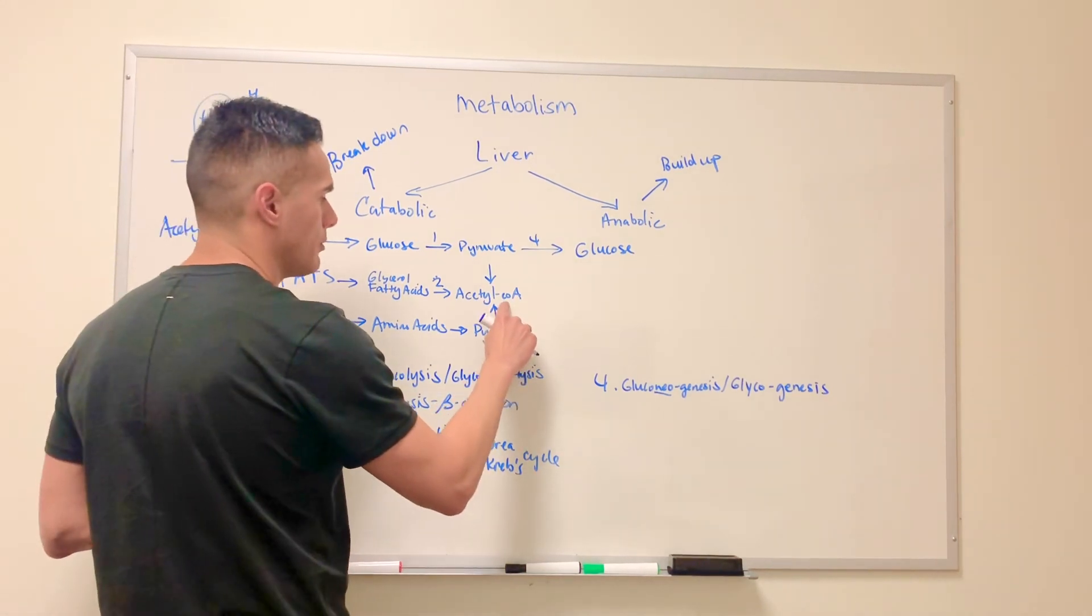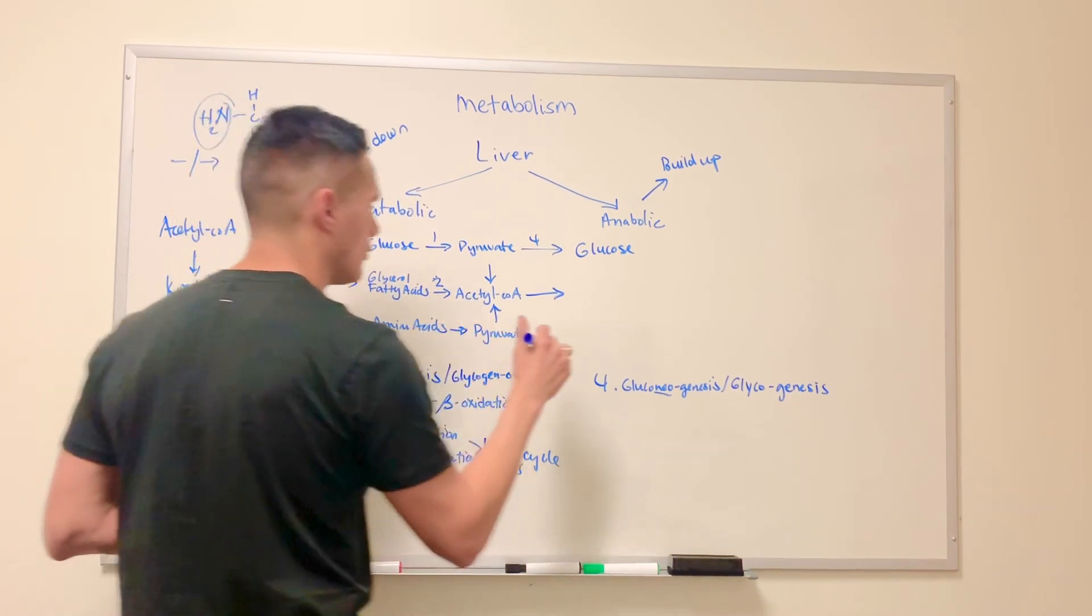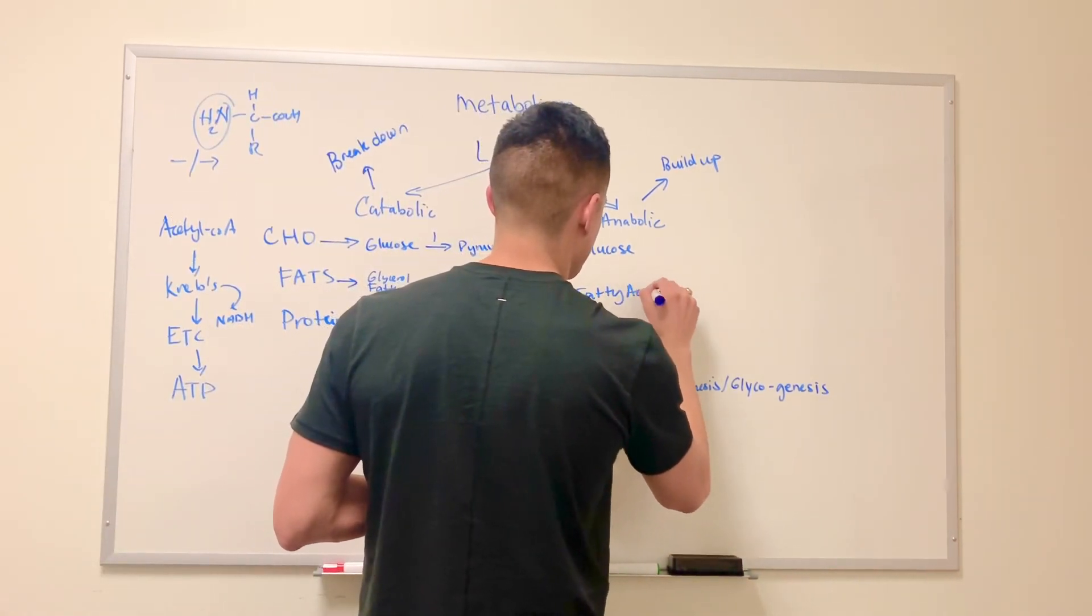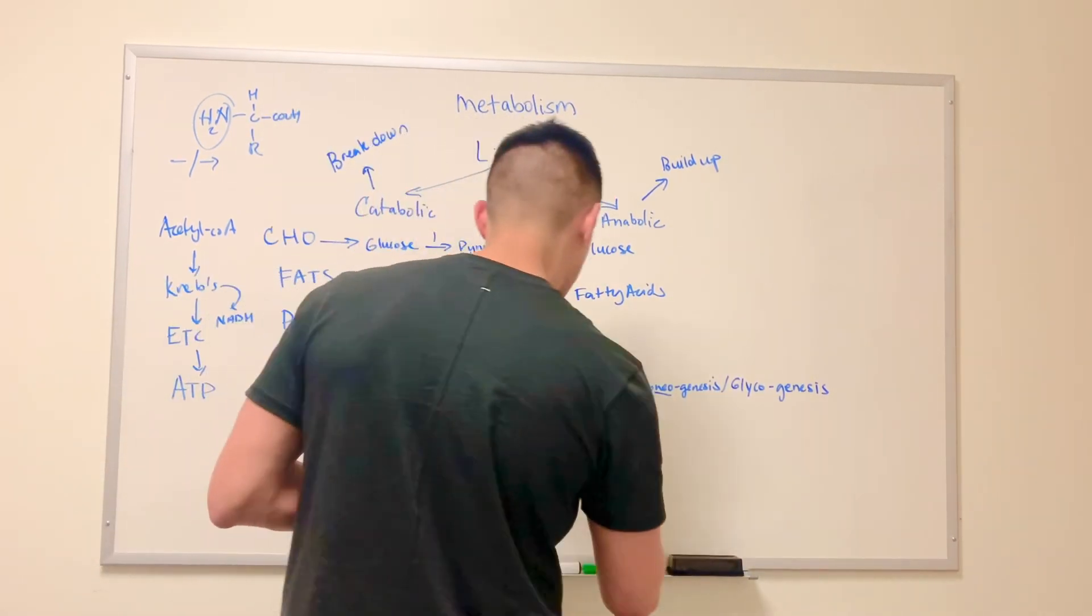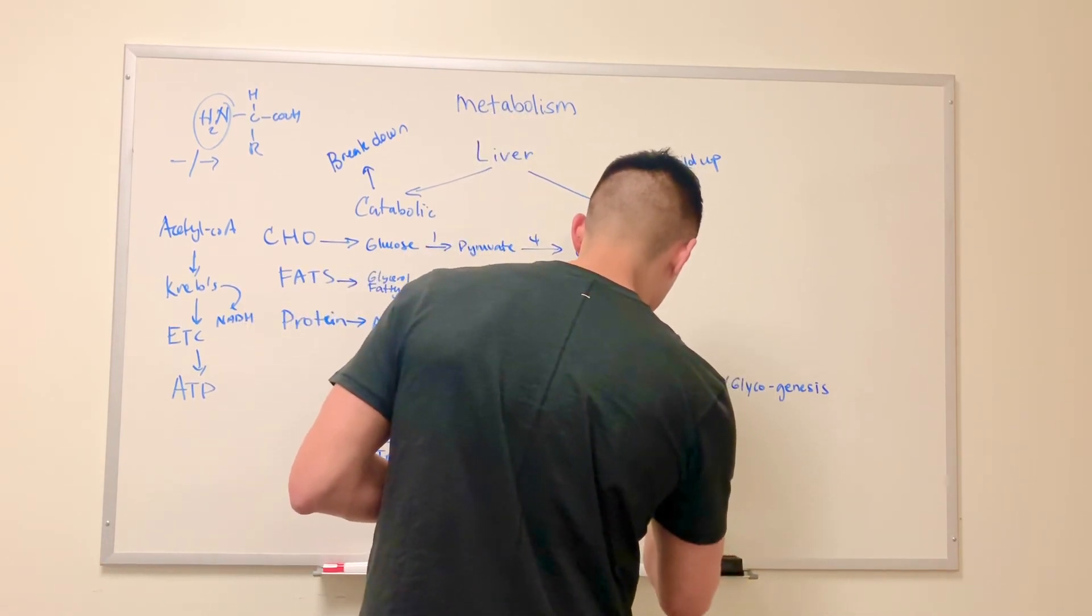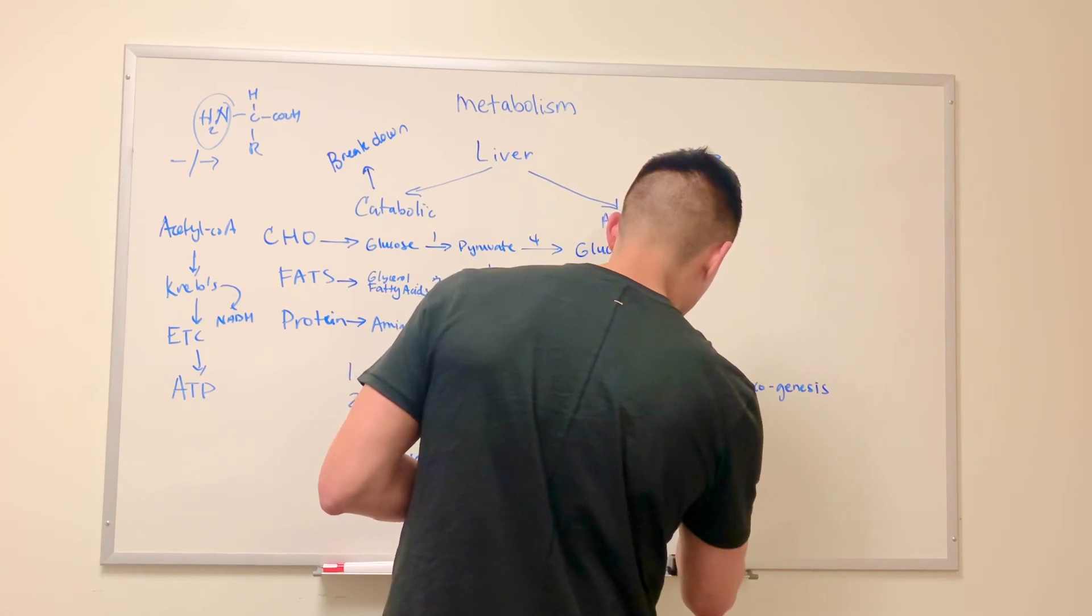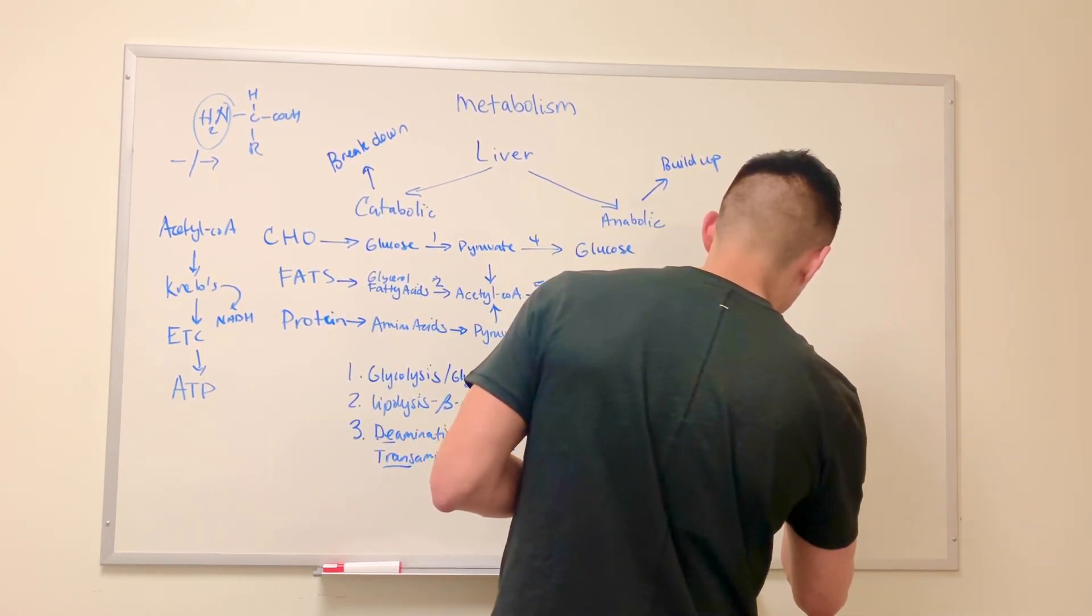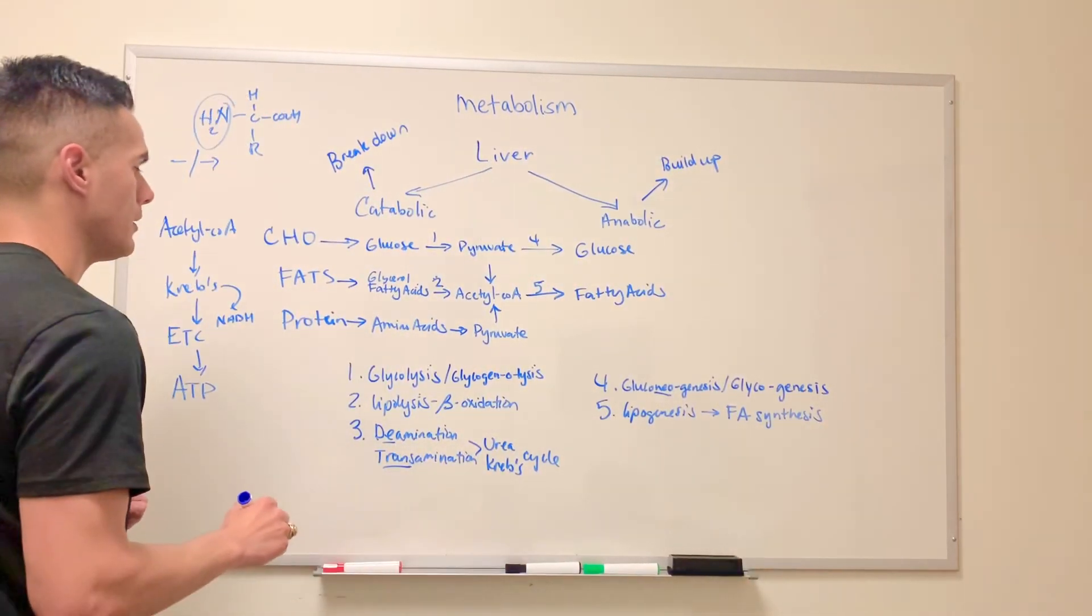And now let's go back to fats. And so the reverse of this process, we can use acetyl-CoA to form more fatty acids. So this is the reverse. And so this process is known as, generally speaking, lipogenesis. More specifically, it's fatty acid synthesis.